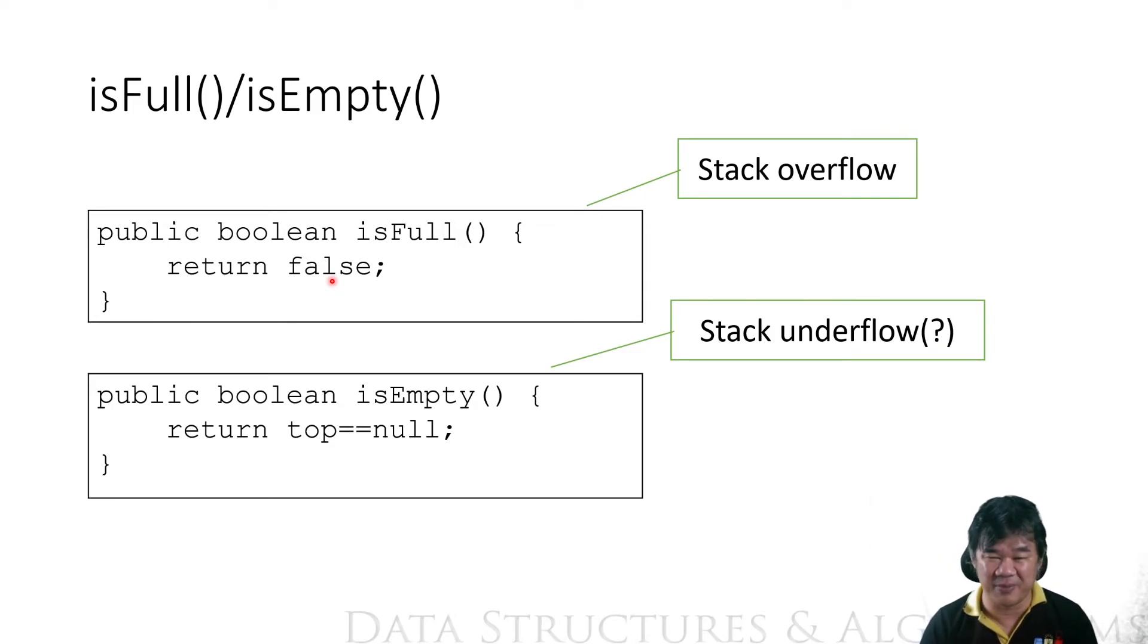Your program is going to be very bad. It's not going to run available in that machine, right? So I just return false just to make it easy. And then isEmpty is top equal to null.